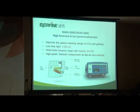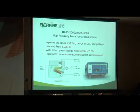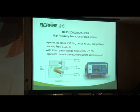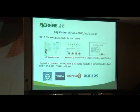For the choice of spectral radiometer in such a system, we recommend using a high accuracy array spectral radiometer for optimization of measurement speed and accuracy. This is a product of a high accuracy array spectral radiometer produced by Everfine. It has very low stray light level and a wide linear dynamic range. Besides, its transient measurement speed is as fast as microseconds, so both measurement accuracy and speed can be assured. This product has been granted US and China patents and has been applied in hundreds of companies and institutes.